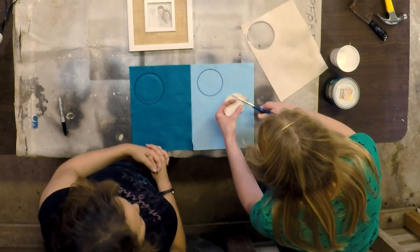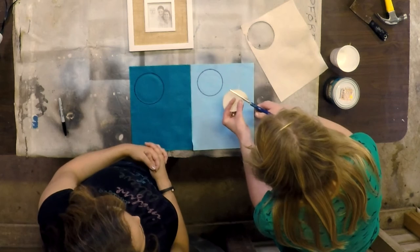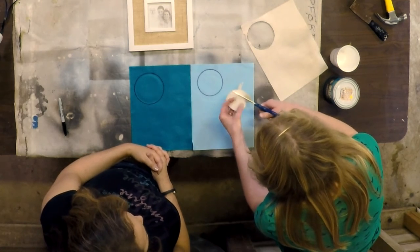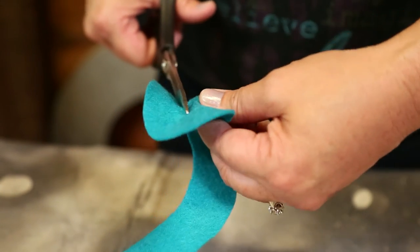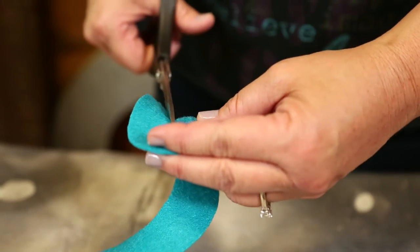Once you have all three circles, begin cutting a spiral pattern. Cut into the circle about an inch or so and then continue to follow that pattern until you reach the end. I'm at the end of my rope.